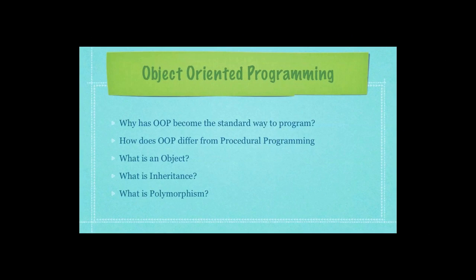Why has object-oriented programming become the standard way to program? How does object-oriented programming differ from procedural programming? What is an object? What is a class? What is inheritance? What is polymorphism? And a whole bunch more.